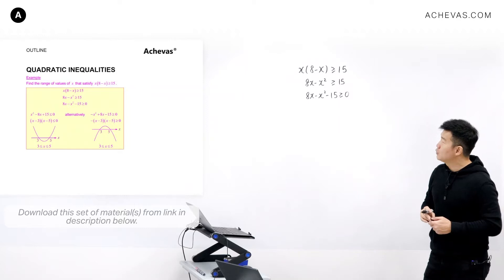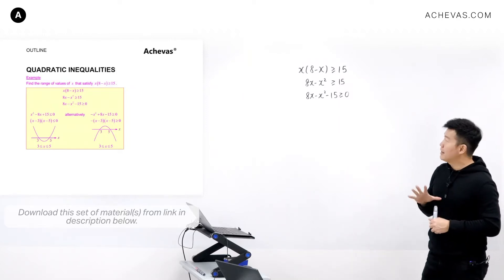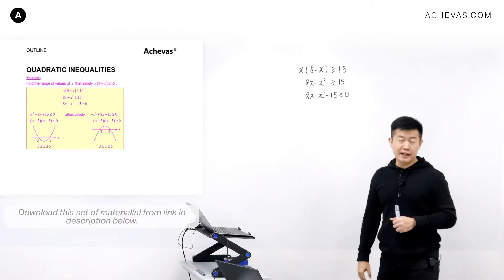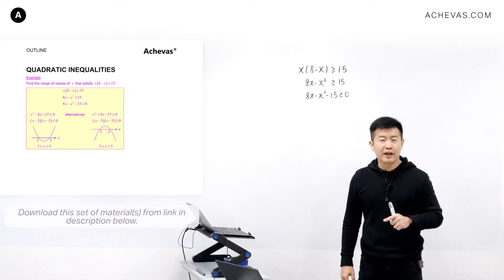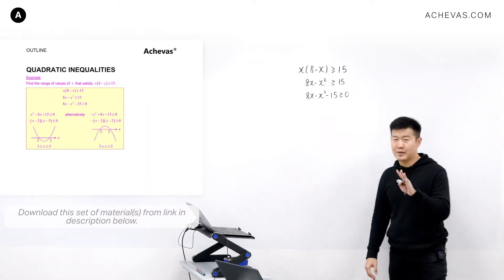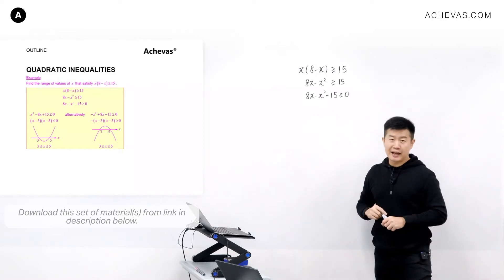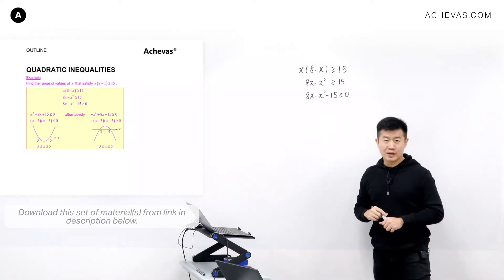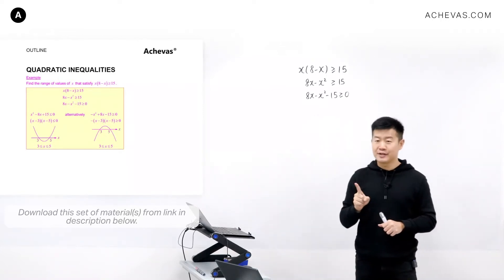The next thing I want to do is a preference of mine — when dealing with a quadratic inequality, I want to make sure that the coefficient of x squared is always positive. I'll explain why later. The coefficient of x squared I have now is negative 1, which is not my preference.